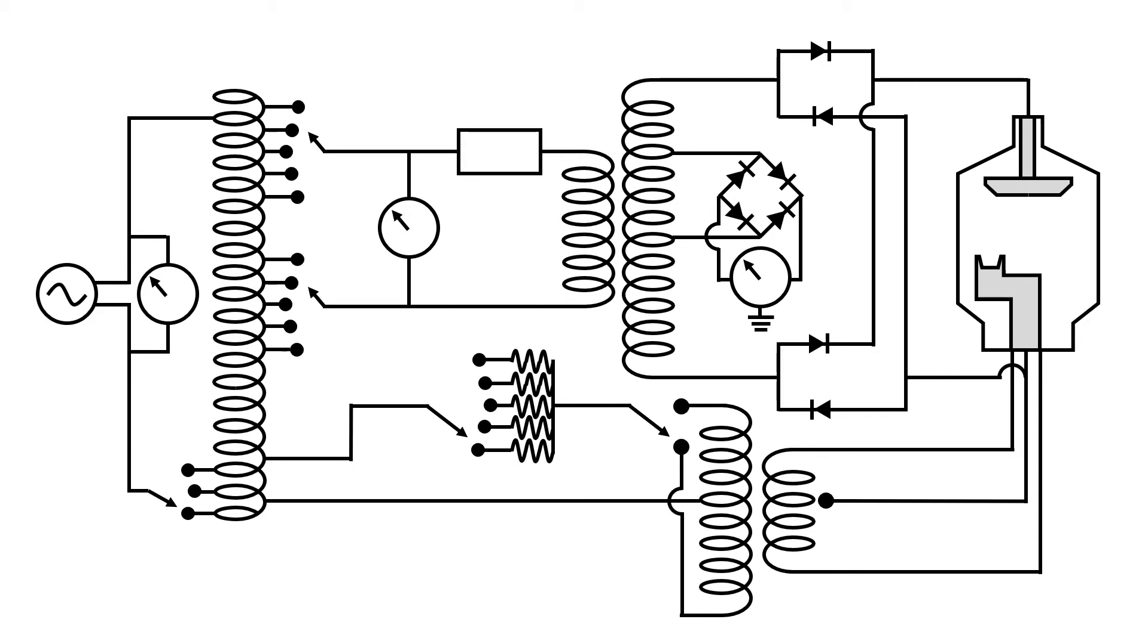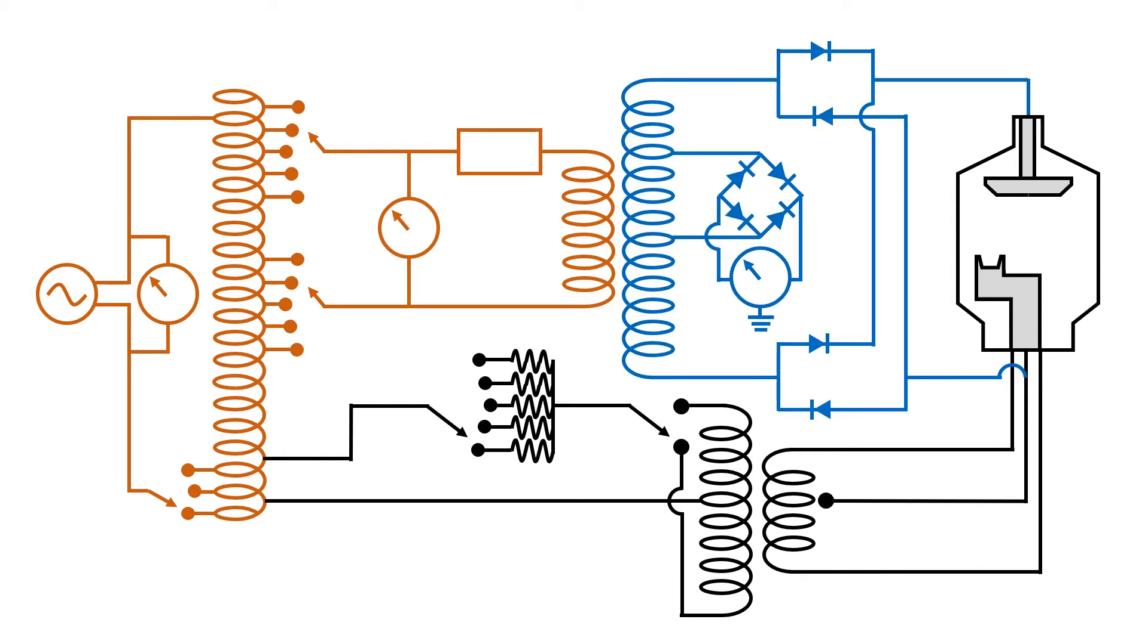The first part is the primary circuit, also sometimes referred to as the control console. Next is the secondary circuit, also sometimes referred to as the high voltage section. Finally, there's the filament circuit, also sometimes referred to as the x-ray tube circuit.